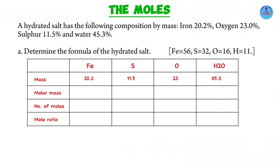Molar mass is equivalent to the RFM. So iron is 56, sulfur is 32, oxygen is 16, and water is 18. Where does 18 come from? We have one oxygen atom — that's 16 — and two hydrogen atoms each with RAM of 1. So 1 times 2 plus 16 gives us 18.